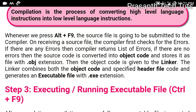First, the high-level language program is checked for errors. We will save the .c source code file. That will produce a .obj file — it will be an object code.